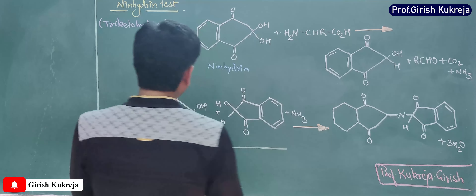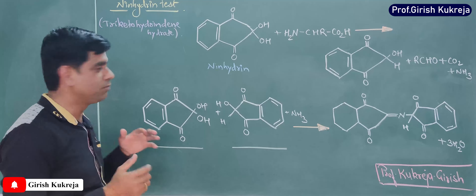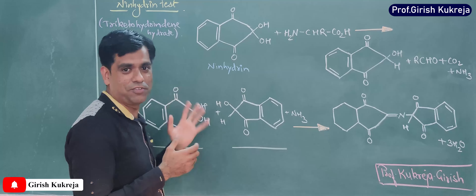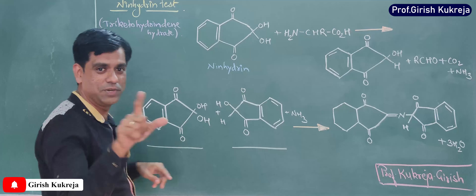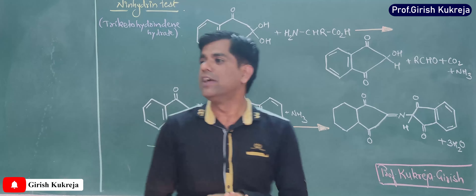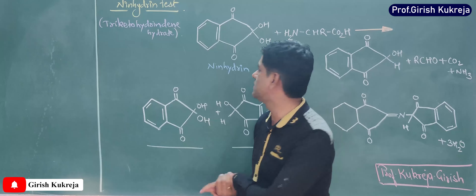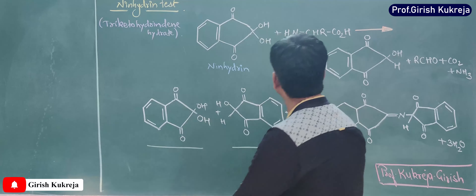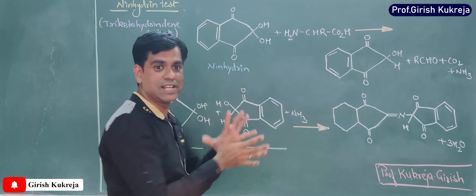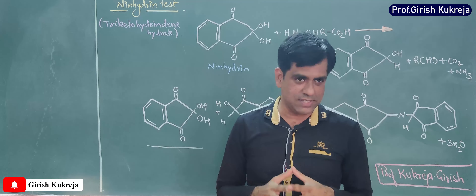Ninhydrin is also known as triketohydrindene hydrate — a wonderful name. I was finding it difficult to remember, so I have written it down here; please remember it. Ninhydrin, or triketohydrindene hydrate, acts as a strong oxidizing agent. So whenever it meets amino acids, being a strong oxidizing agent, it oxidatively deaminates the amino acid.